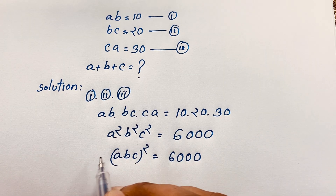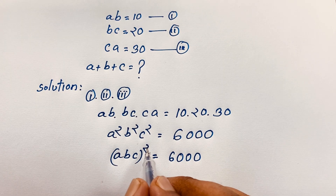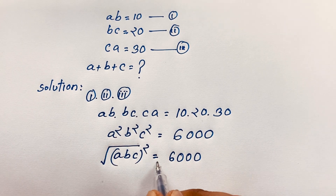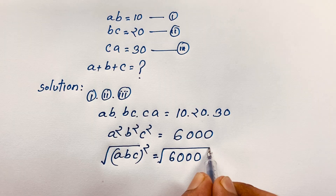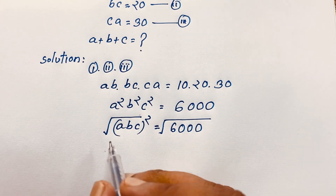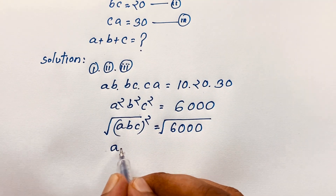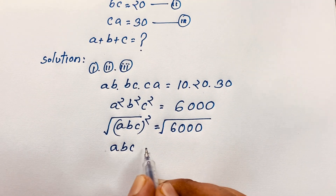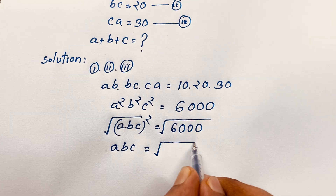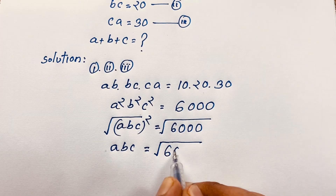Now I want to remove this square, so I use square root on both sides. Then we will find out ABC is equal to square root of 6000.